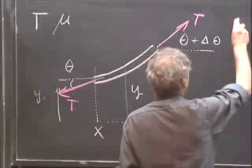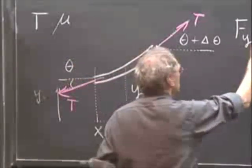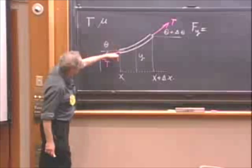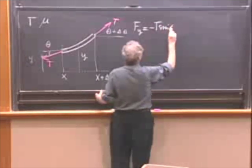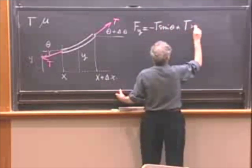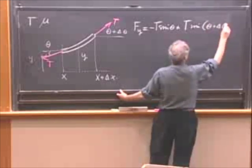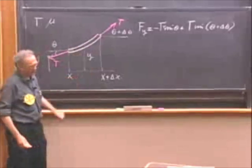And so F_y on this segment is then minus T sine theta, because this component is down, minus T sine theta plus T sine theta plus delta theta, because this component in the Y direction is driving it away from equilibrium.